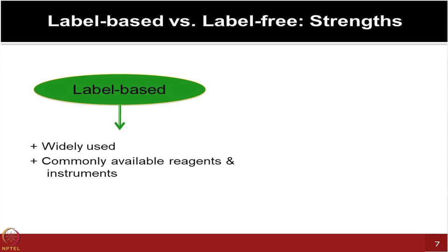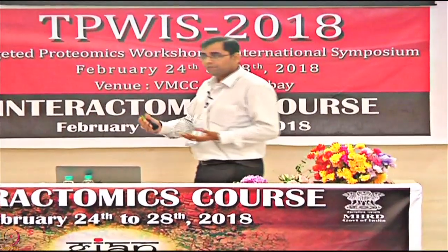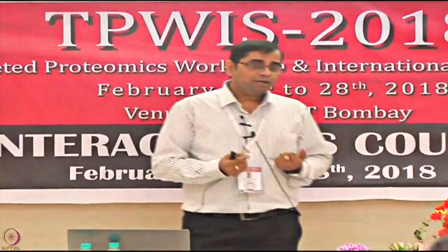One major advantage of label-based technologies is that they are widely available — every lab and center will have those scanners, reagents are easily accessible, and you can borrow dyes from a neighboring lab. However, you cannot do this with label-free approaches because those technologies are very specific. With label-based platforms, you are not monitoring in real time — it can take a whole day to do the experiment, and at the end you rely on the scanner to show whether your spots lit up or not.